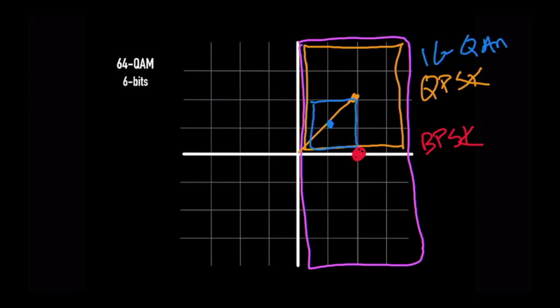When we finally get to 64-QAM, the EVM box is even smaller still. And you can see how we went from purple to yellow to blue to green. Each EVM box got smaller and smaller.